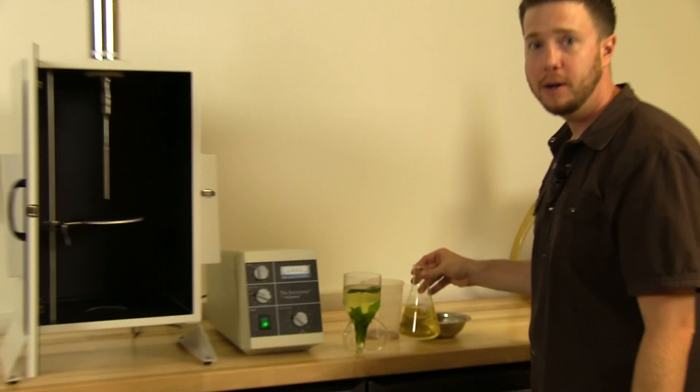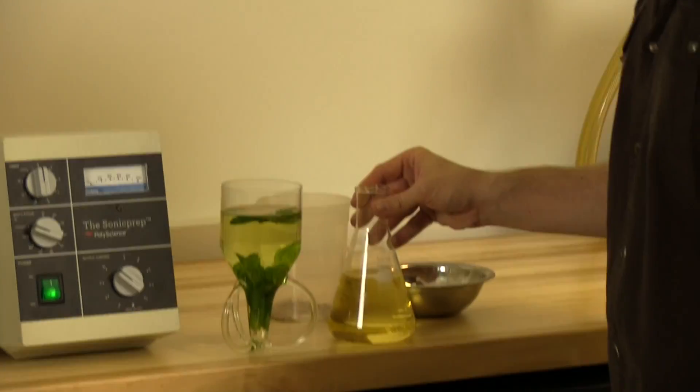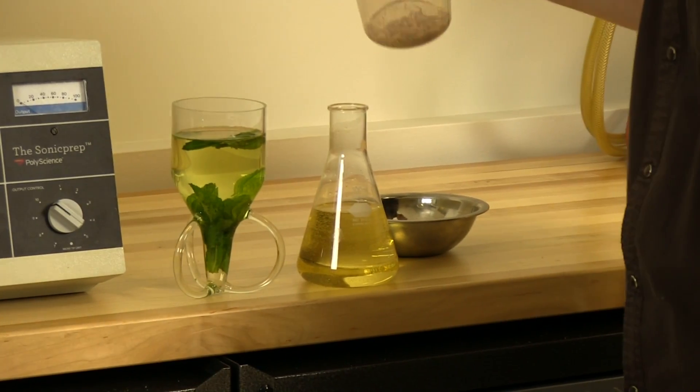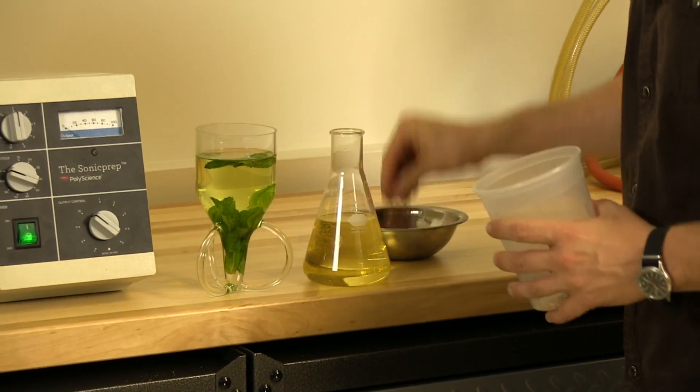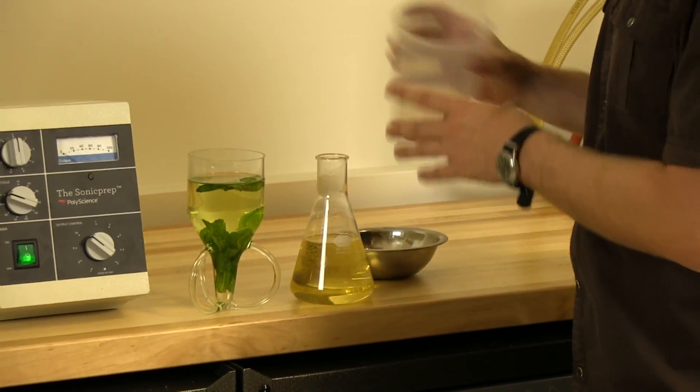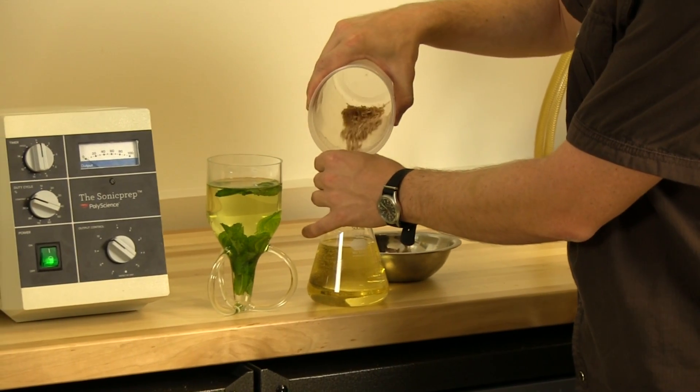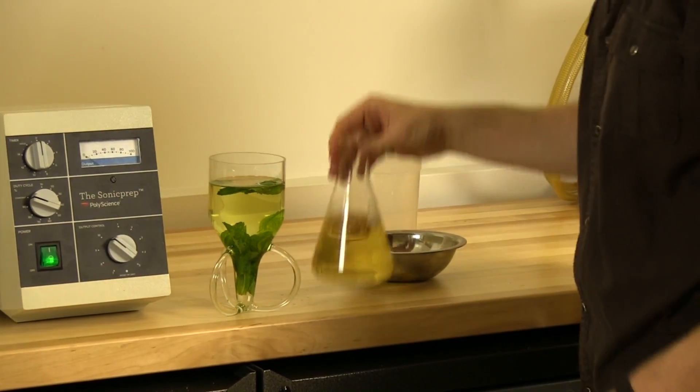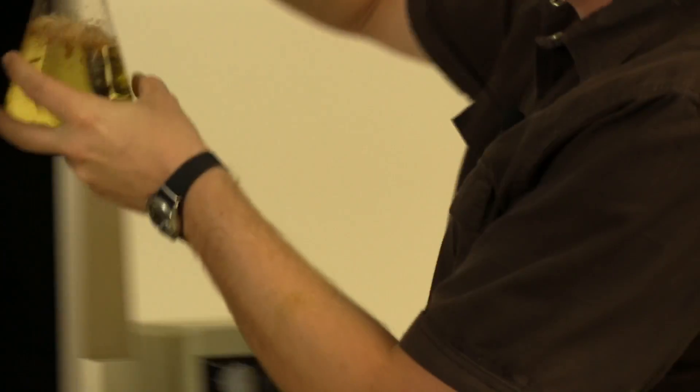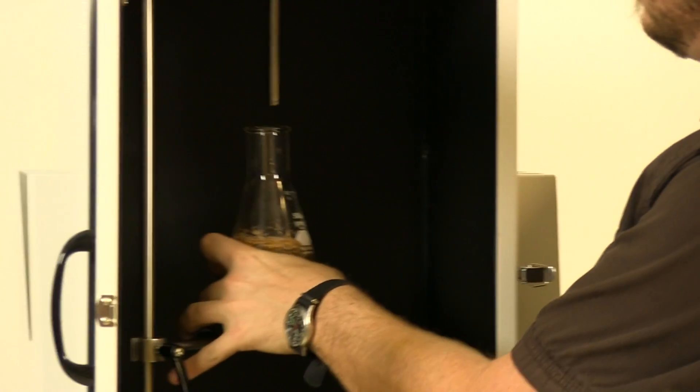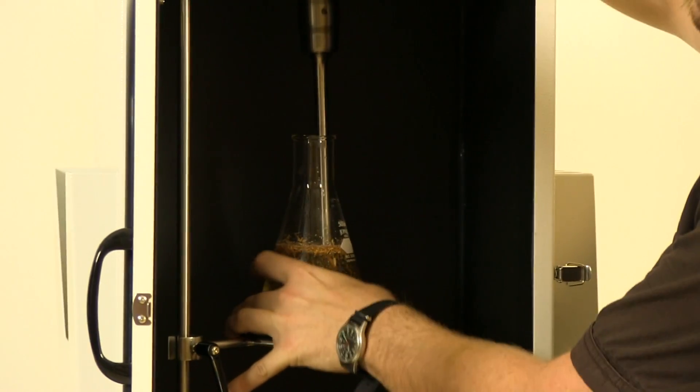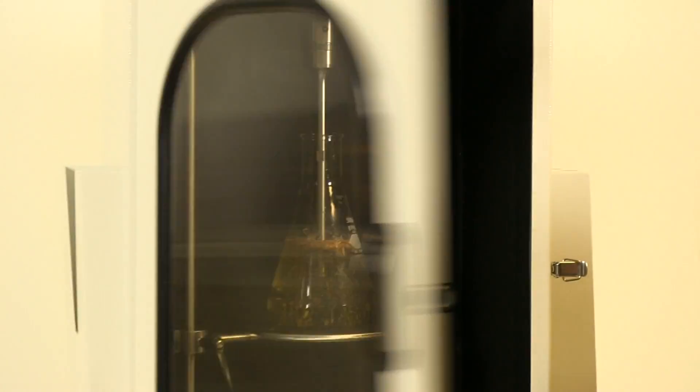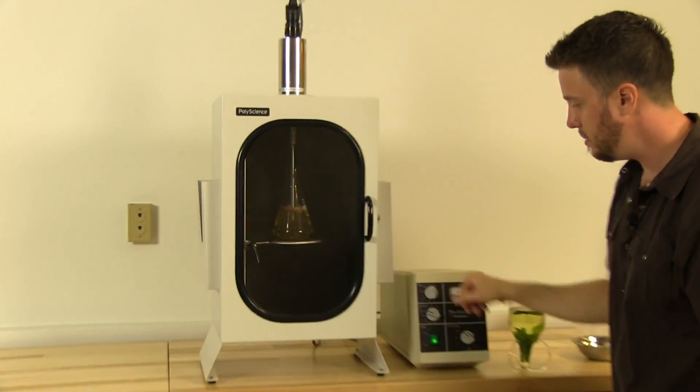So we have some un-oaked chardonnay here, steel barrel chardonnay, and we're going to barrel age it very, very rapidly. We have some oak chips that we're going to place in here, close it up, and let it rip.